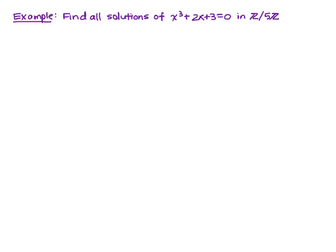Note that Z mod 5Z only has 5 distinct elements, and so there's only 5 possible choices for things that could be solutions to this equation. And there could be more than one solution.